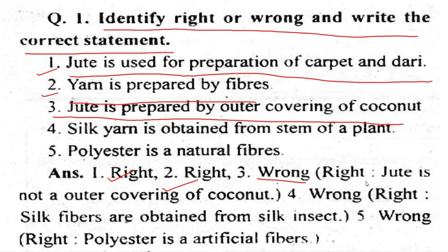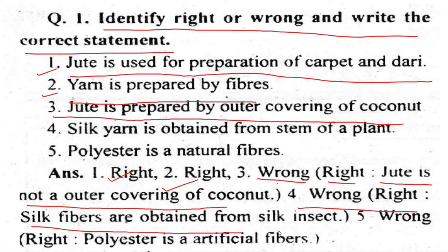Statement 3: Jute is prepared from the outer covering of coconut - this is wrong. The correct answer is that jute is not obtained from the outer covering of coconut. Statement 4: Silk fibers are obtained from the silk insect. Statement 5: Polyester is a natural fiber - this is wrong, as polyester is a synthetic fiber.